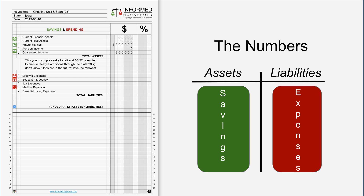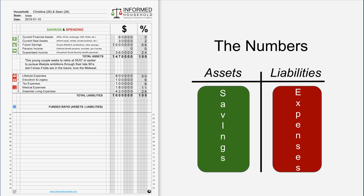Let me fill in some numbers first and then explain them. These are their figures as of today in present dollar terms. On the asset side: current financial assets include their IRAs and investments; current real assets could include a house or maybe an antique automobile. The biggest item here is future savings, which consumes most of their assets at this point — meaning they are committing to save that much in present value terms by the time they hit their mid-50s.